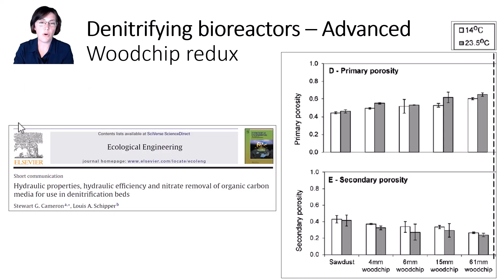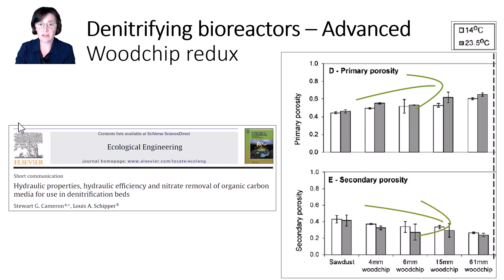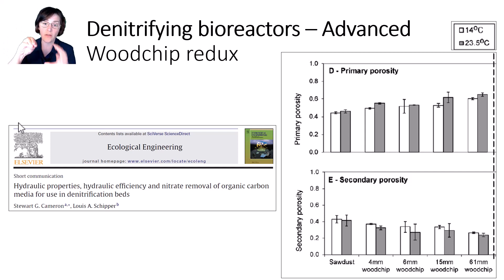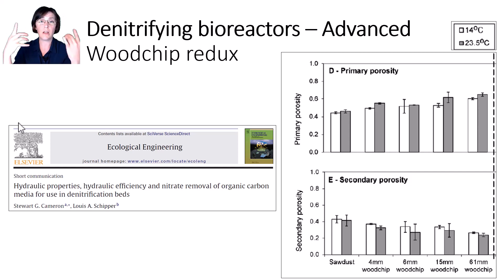One final example, where woodchips of different sizes were tested: primary or drainable porosity increased with increasing particle size, whereas secondary porosity decreased with increasing particle size. This particle size study is interesting because it might be those really tiny micropores that account for why we see similar nitrate removal rates when we test different woodchip particle sizes in the lab — there's usually no difference. It's possible that denitrification occurs both within the wood particle and on the surface, because water and nitrate diffuse into and out of the wood via those micropores.